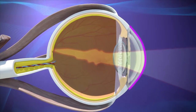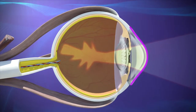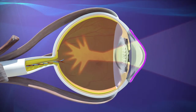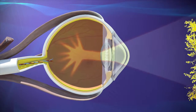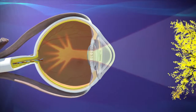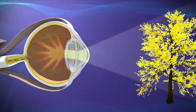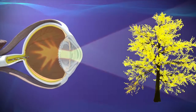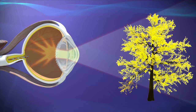But with astigmatism, the cornea has more of an oblong shape, like an oval, causing light to bend and distort as it passes through the lens. This makes objects appear blurry or unfocused, because light rays are not focused on one spot to provide clear vision.